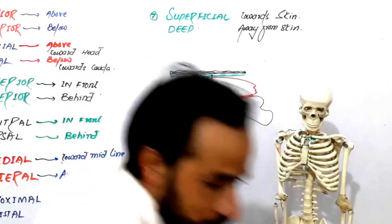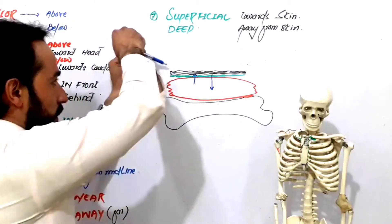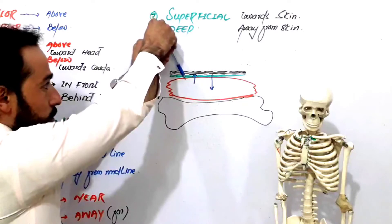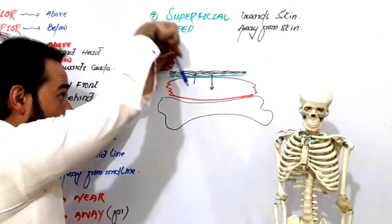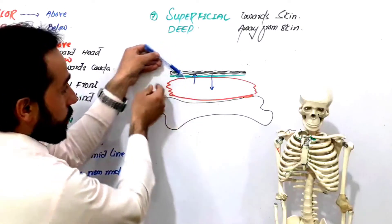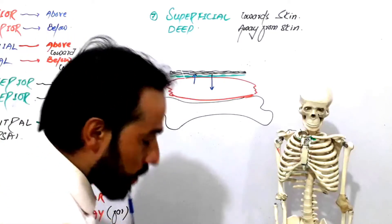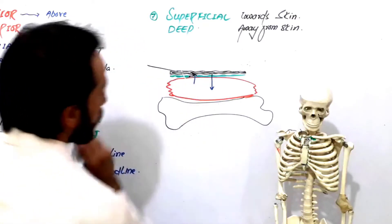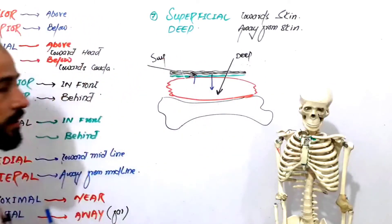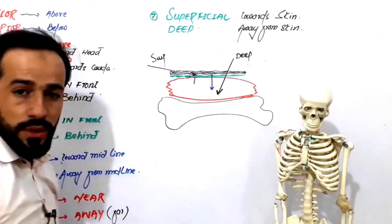For example, if a doctor says to give an injection deep, you have to cross the skin layers, enter the muscle, and then inject — you are going away from the skin, inside the body. But if the doctor says give it superficially, you enter only a little, going towards the skin. So going towards the skin is superficial, and going away from the skin is deep.